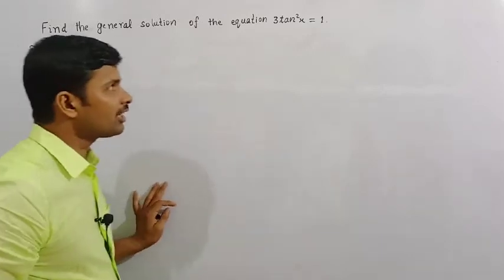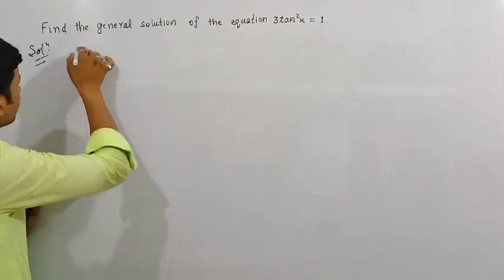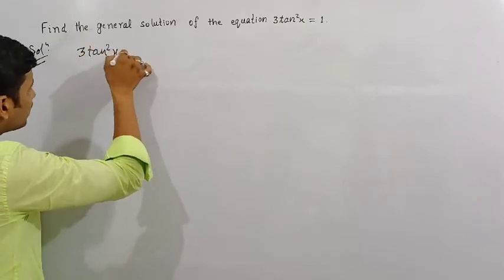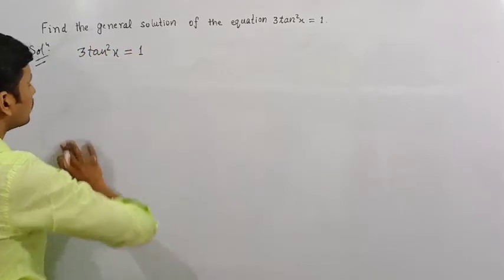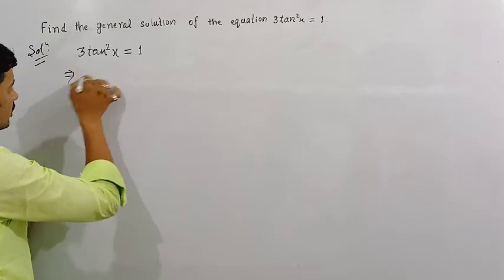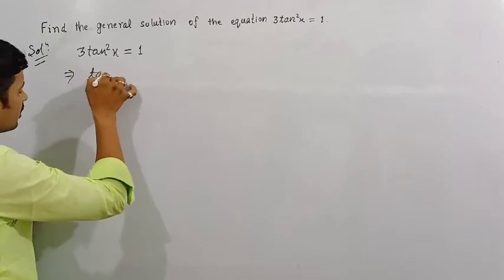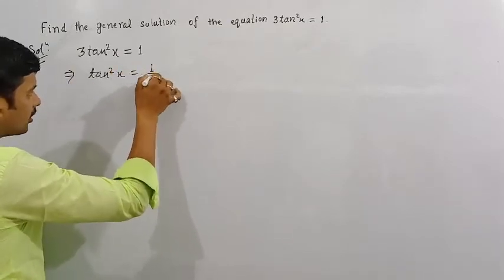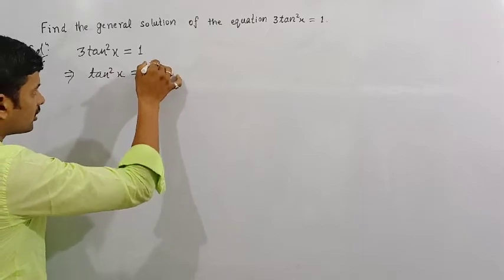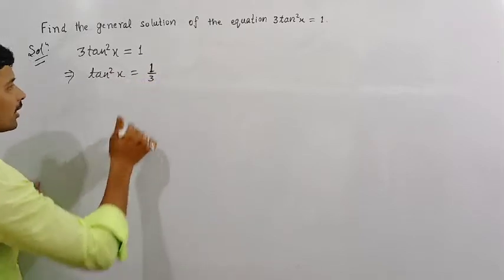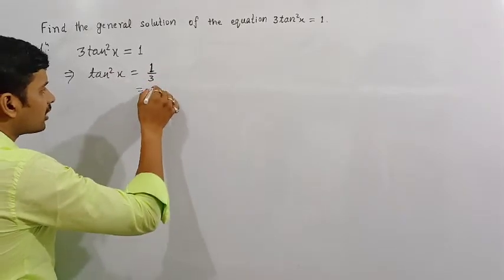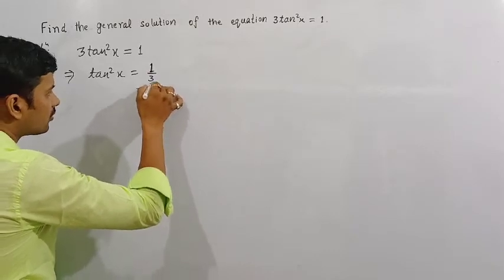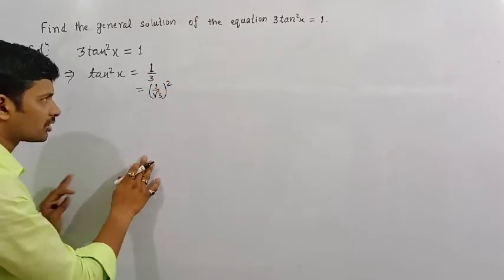The equation that we have is 3 tan squared x is equal to 1. Simply, this can be written as tan squared x is equal to 1 by 3. Now, 1 by 3 can be rewritten as the square of 1 by root 3.